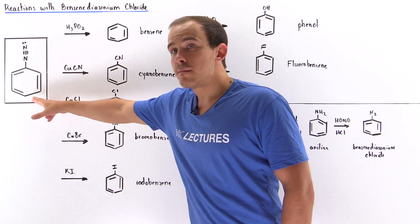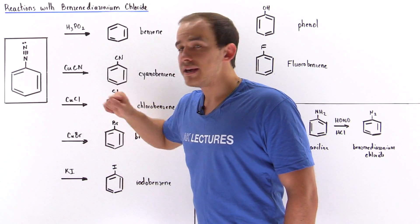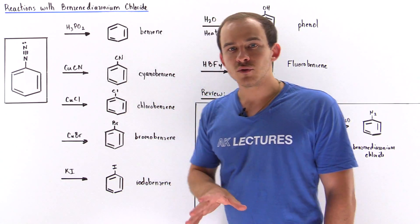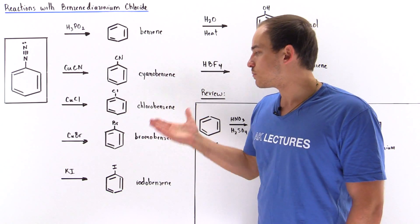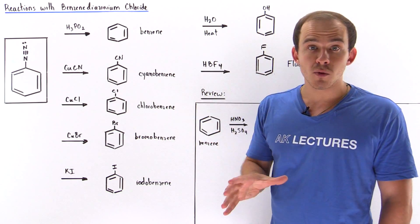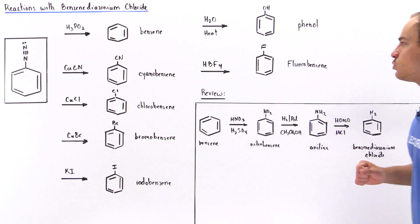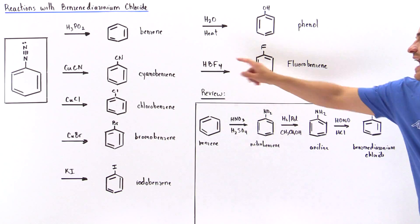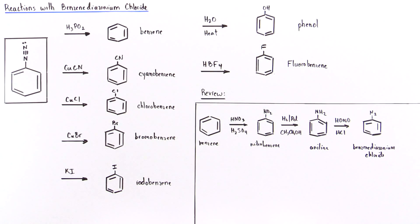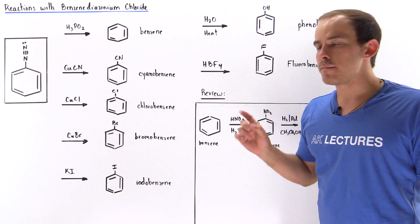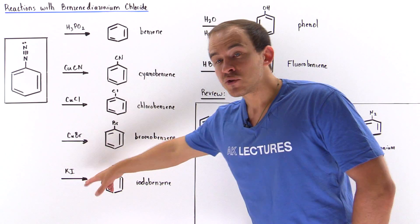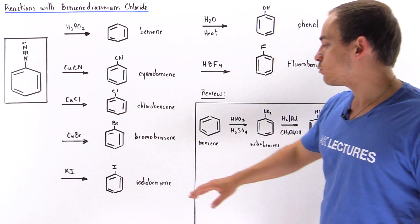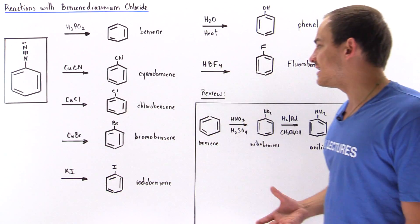If we take our benzene diazonium molecule and mix it with copper chloride, we produce chlorobenzene. If we mix it with copper bromide, we produce bromobenzene. If we mix it with fluoroboric acid, we produce fluorobenzene. And if we react it with potassium iodide (KI), we produce iodobenzene.